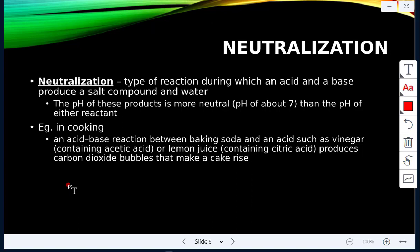Whereas the reactants, the acid would have a pH of below 7, the base would have a pH of above 7. Example here is cooking. An acid-base reaction between baking soda and an acid, such as vinegar, which contains acetic acid, or lemon juice, which contains citric acid, will produce carbon dioxide bubbles that will make a cake rise.